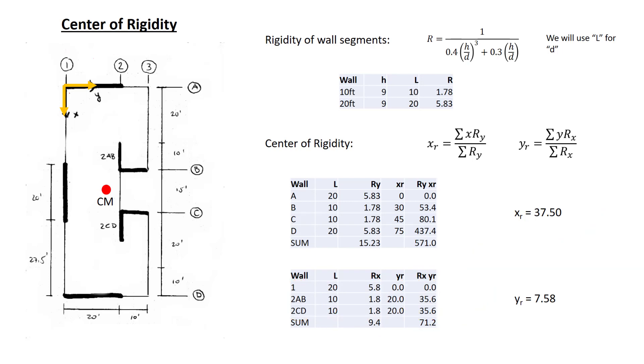Now let's interpret the center of rigidity. First, we can locate it on the diaphragm. So we see that the center of rigidity is at 37.5 in the x direction, and we could have noticed that by symmetry, same as the center of mass. It's 7.58 feet away from line 1, and we'll recall down here the center of mass was at 14.29. The difference between these two is the eccentricity, and we'll use this information later.